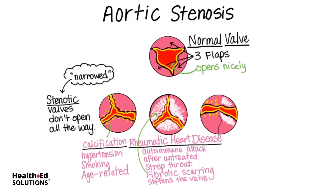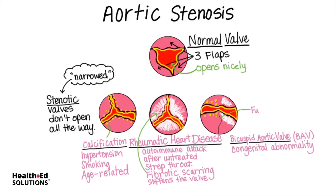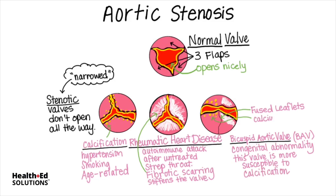An additional risk factor for the development of aortic stenosis is bicuspid aortic valve, or BAV. This congenital abnormality occurs when two of the three flaps fuse together during the first few weeks of embryological development. About one to two percent of all people are born with this condition. Most of the time the valve works just fine. However, the shape puts the valve under different pressure forces, which may make this valve more susceptible to calcification, seen here, and fibrosis, seen here. Hypertension or autoimmune reactions are both more likely to damage this type of valve.